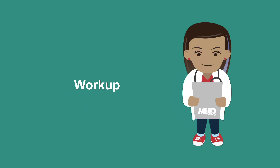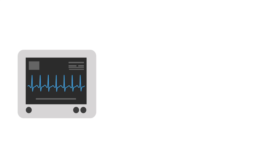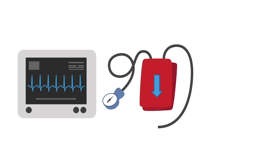Now let's discuss the workup. On observation, the patient can be ill-appearing, especially in disease complicated by advanced ischemia or perforation. The patient may also be lying very still and not want to move, with pain out of proportion to the exam. They may have alterations in their vital signs, most notably tachycardia, hypotension, and fever.